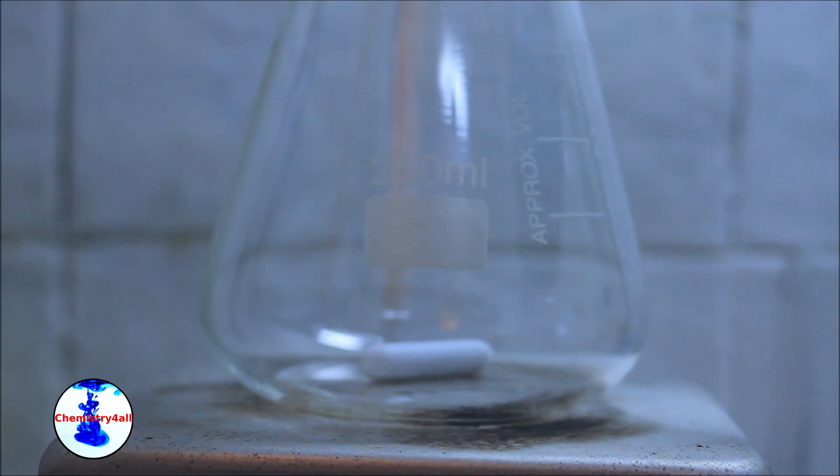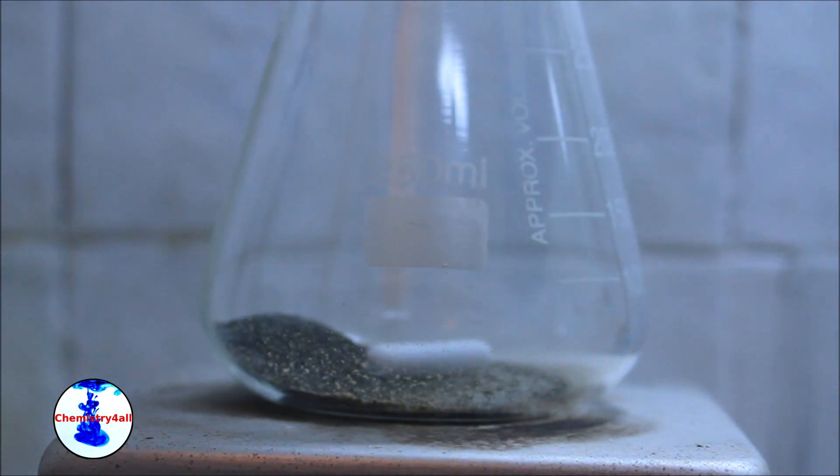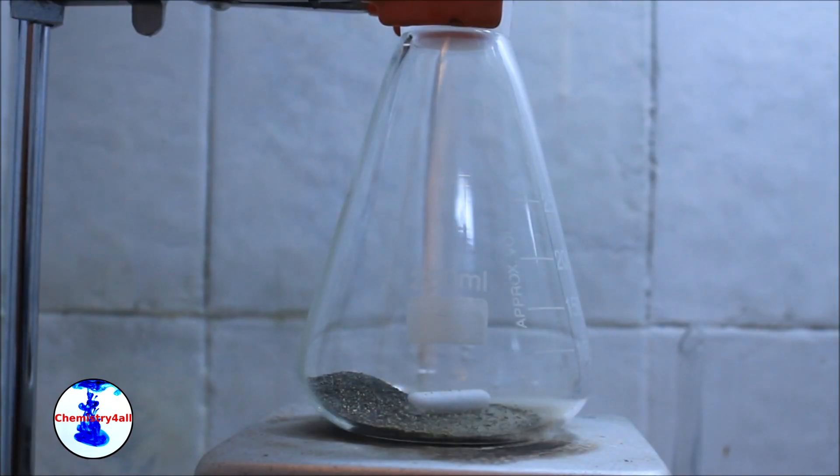First the potassium permanganate is added to an Erlenmeyer flask in addition to a magnetic stirring bar. Then, 130 milliliters of distilled water are poured into the flask.